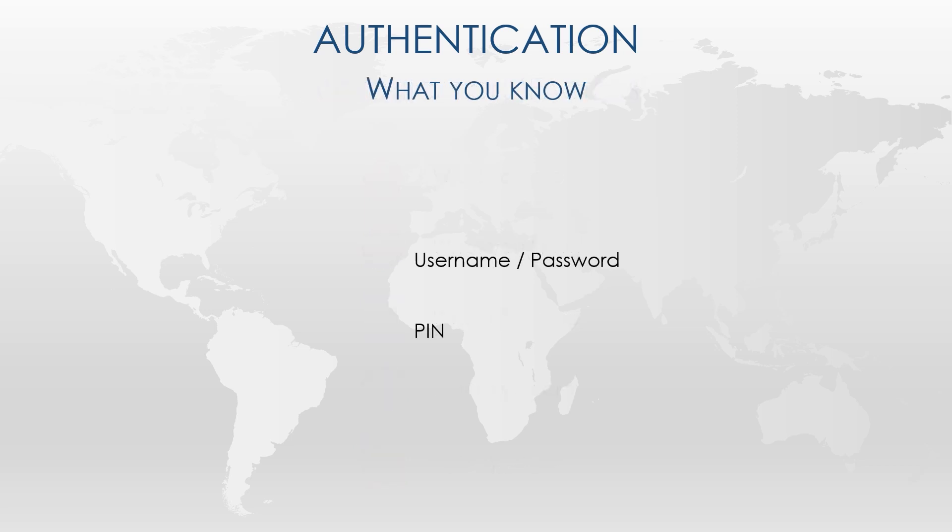The first form of authentication that would jump to your mind is a username and password. This is an example of something that you know — only you know your password, so if you enter it correctly, you must be who you say you are. Another example of what you know is a PIN that you might use when entering a secure building or withdrawing money at the bank.